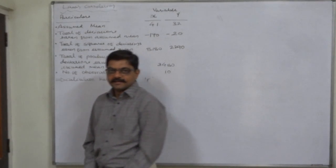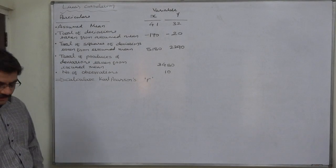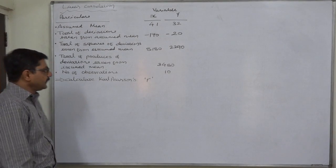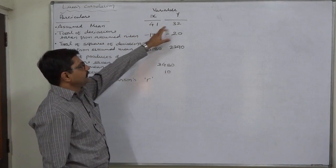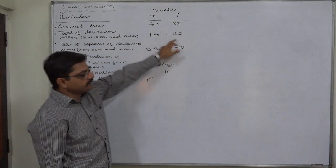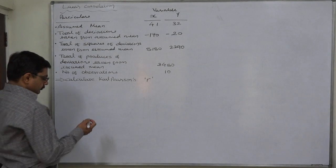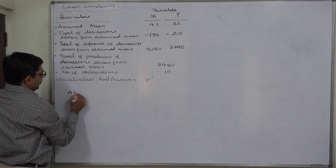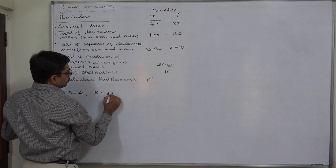Hello and welcome friends. This is a new case of correlation. The question involves assumed means: for x it is 41 and for y it is 32. We take the total of deviations from the assumed mean. For x we know the assumed mean as 'a' equal to 41, and the assumed mean of y we know as 'b'.